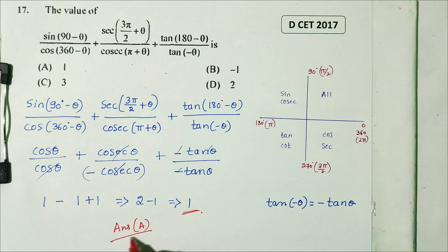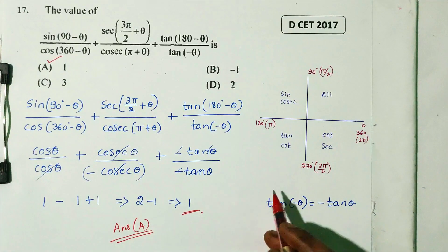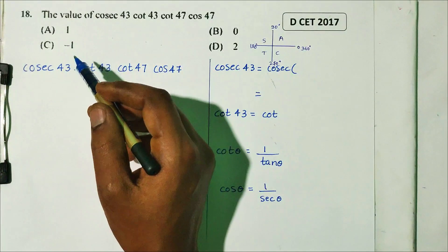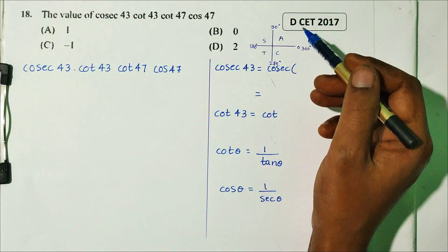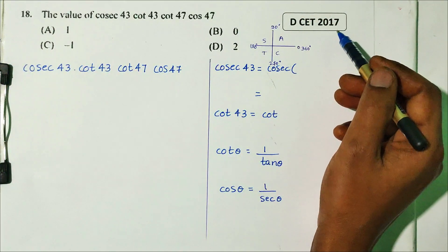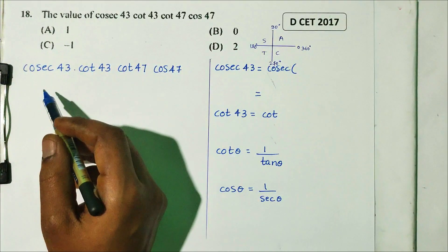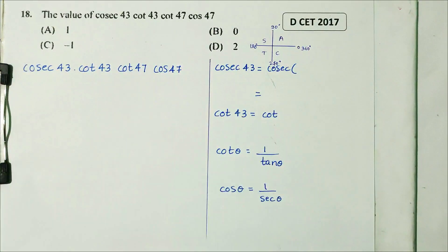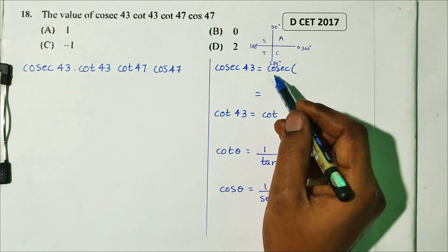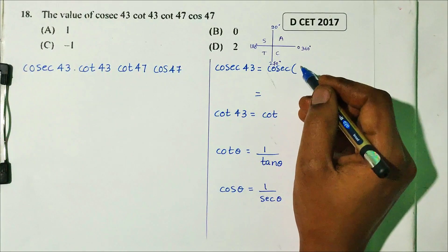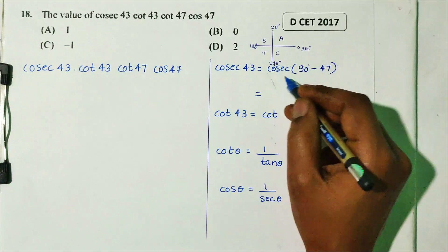Question number 18. The value of cosec(43°)·cot(43°)·cot(47°)·cos(47°). This is from DCT 2017. First, observe that cosec(43°): we use the identity that 90° − 47° = 43°.